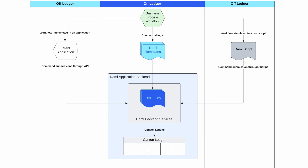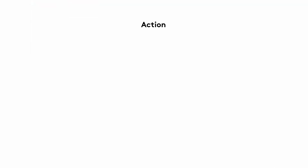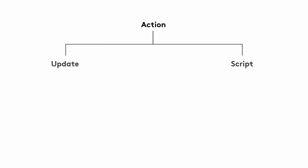Understanding what is off-Ledger, on-Ledger, and what update actions do, helps us understand what and how we're testing. Let's dig in a little more into actions. The update actions written in templates versus the script actions in test scripts are both instances of the action type class.